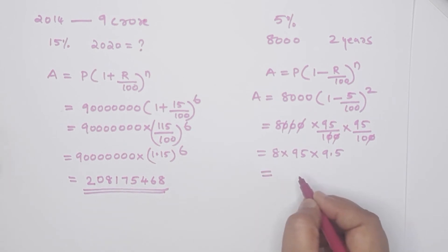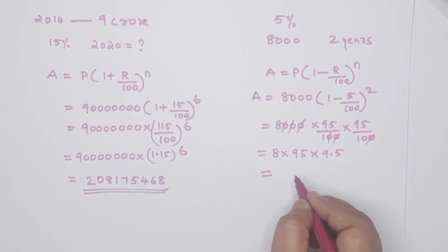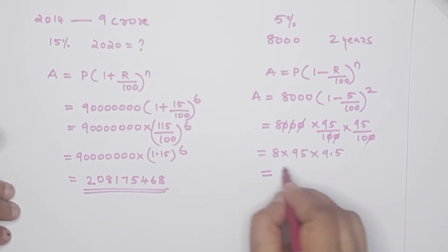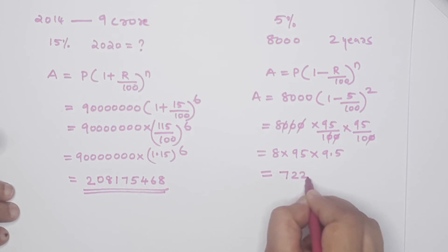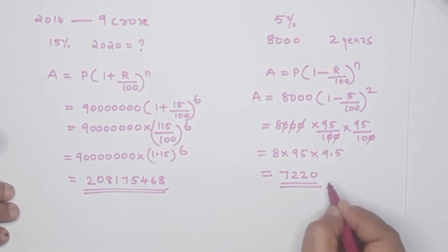This is multiplied to get the answer. We do the last multiplication and we get 7220. The answer is Rs. 7220.